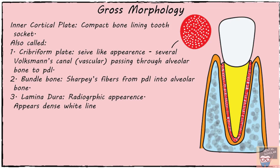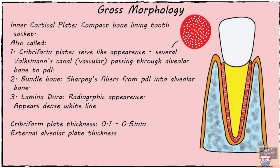This dense white line appearance is not because the alveolar bone has a different composition in the compact and spongy regions — the composition is the same. It is because the spongy bone has more soft tissue marrow spaces within it, whereas these spaces are lacking in compact bone, so it appears more dense. The thickness of the inner alveolar plate (cribriform plate) is about 0.1 to 0.5 mm, while the external alveolar plate thickness is variable — for example, about 1.5 to 3 mm on the posterior teeth, making it thicker than on anterior teeth.